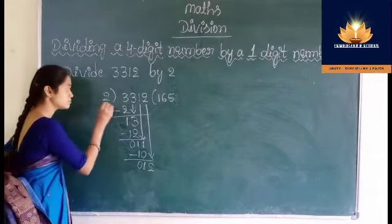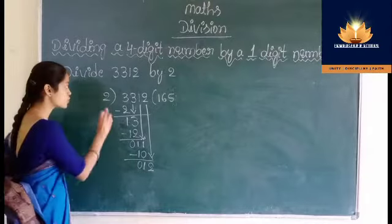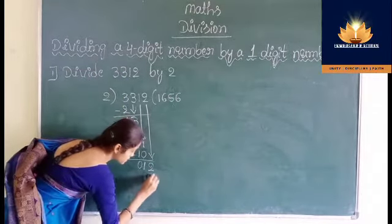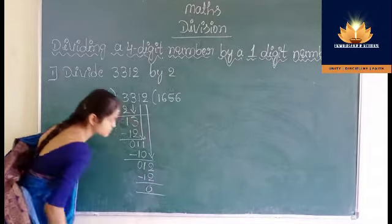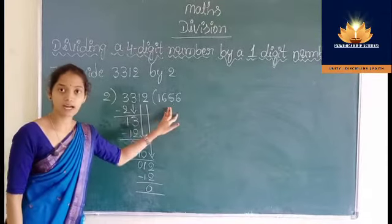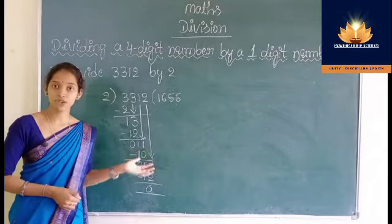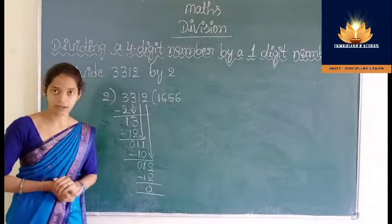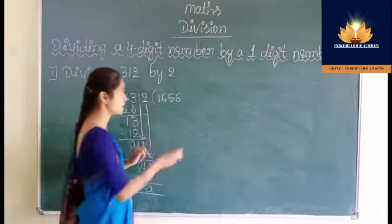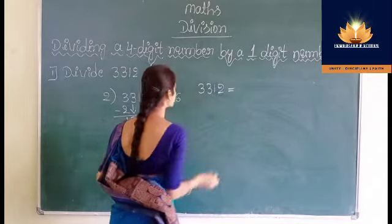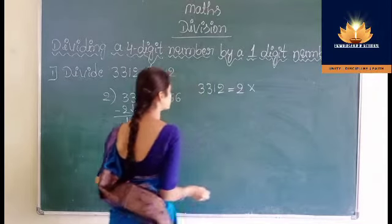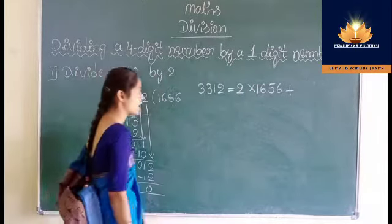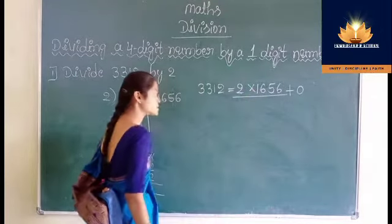2 sixes are 12. Write 6 in place of the quotient. Then write the product 12. We can check our division: dividend = divisor × quotient + remainder. Here dividend = divisor × quotient. We get quotient 1656 plus remainder, which is 0. So multiply 2 by 1656.